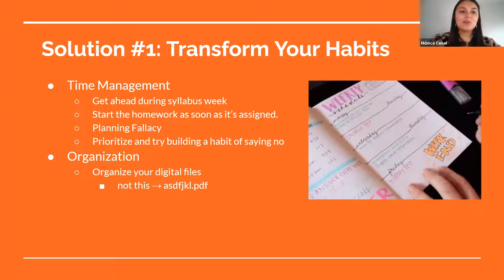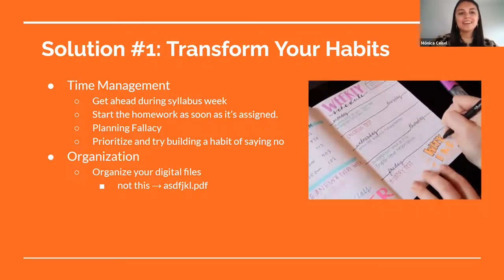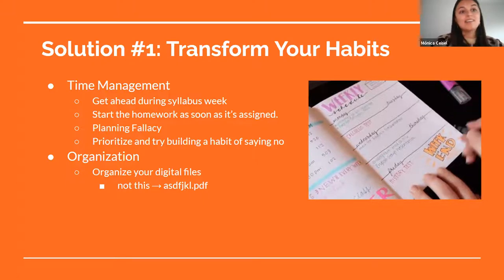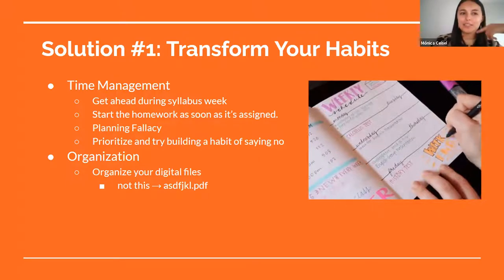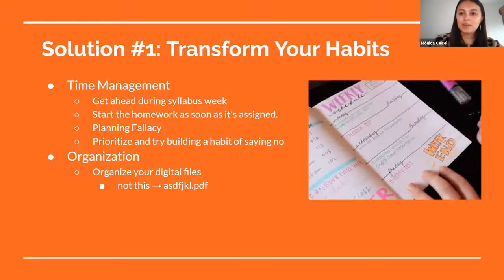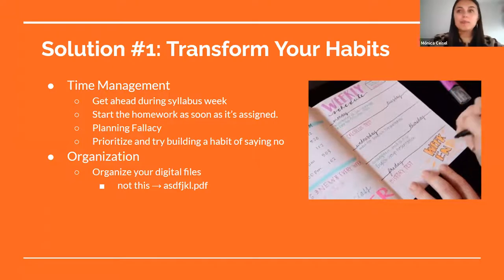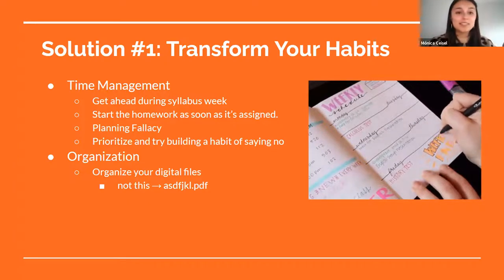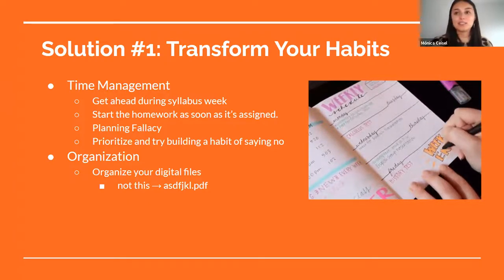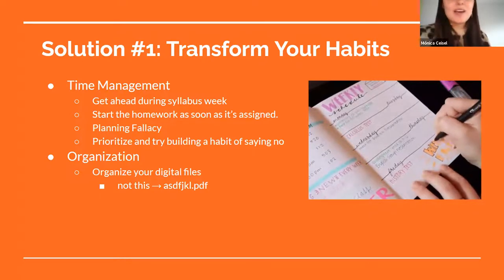Estimate more time than you think you'll need — at least double it. We tend to underestimate how long work actually takes us; this is called the planning fallacy. If you'd like to learn more about the psychology behind this, I recommend reading 'Thinking Fast and Slow' by Amos Tversky and Daniel Kahneman. It's very interesting.